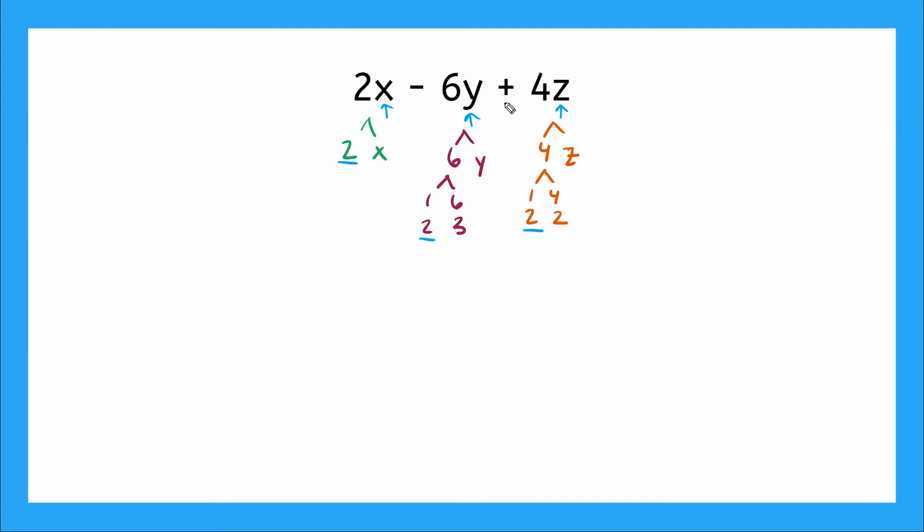So, let's rewrite our expression here using the factors. So, our first term, that would give us 2 × x minus our second term, which would be 2 × 3 × y, plus our third term, which is going to give us 2 × 2 × z.